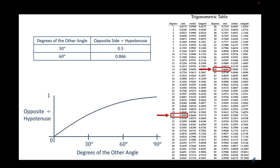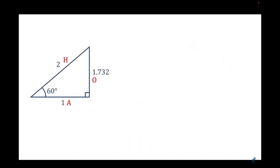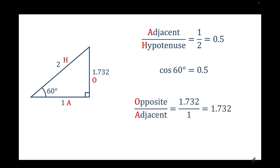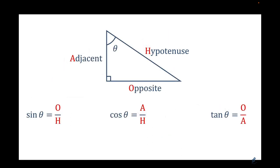What about cosine and tangent? Going back to the first triangle: dividing the adjacent side by the hypotenuse always gives 0.5 for a 60-degree angle — that's cosine of 60. Dividing the opposite side by the adjacent side gives tangent of 60. This is why we teach these formulas in trigonometry — to find missing angles or sides — often using SOHCAHTOA to help students remember them.